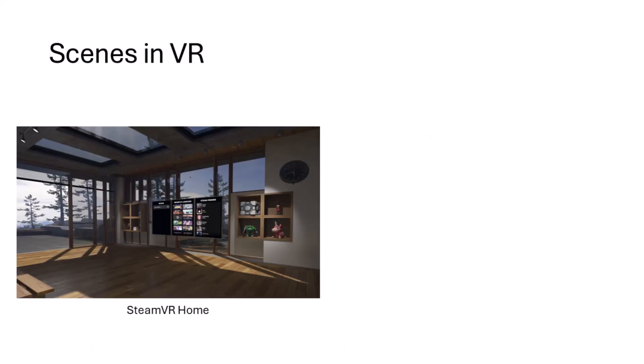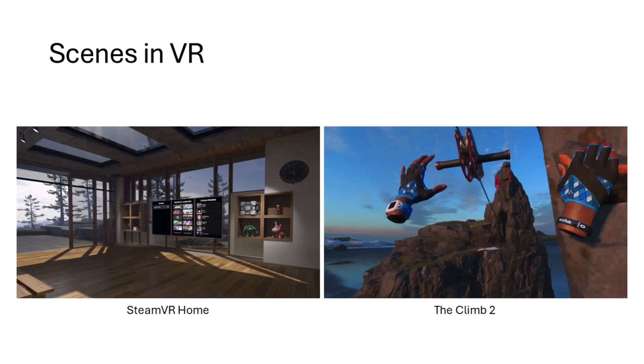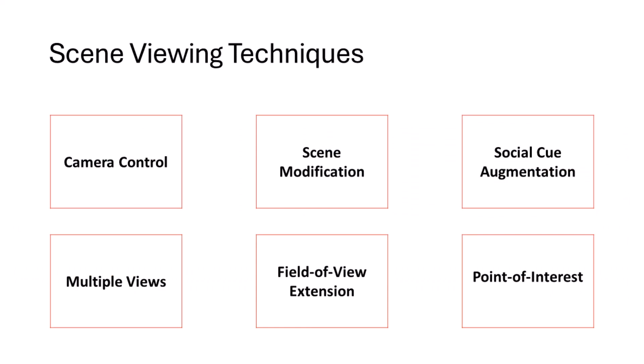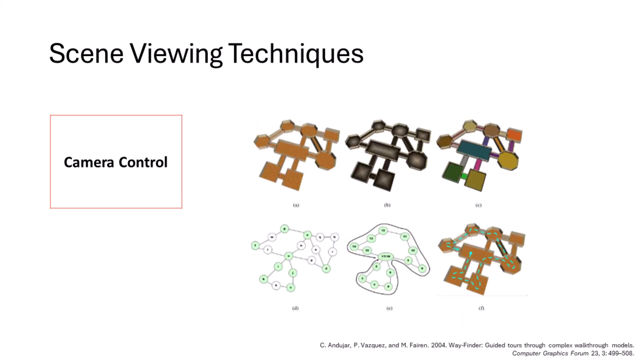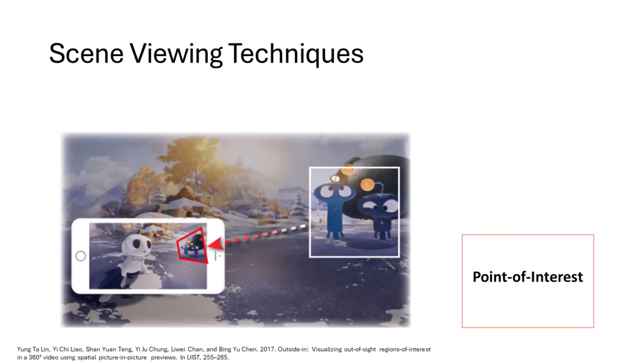Scenes in virtual reality environments are designed to resemble physical environments and, as a result, considerable effort goes into making them believable. For example, environments like SteamVR Home can evoke a comfortable cabin in the woods, while the VR game Decline can transport users to exciting locations that might be too dangerous to visit in person. The richness of scenes and their lack of physical constraints has resulted in the creation of various scene viewing techniques over the past few decades. These techniques include approaches like automatic camera control, which can provide guided tours through various virtual environments, and techniques like outside-in, which is a point of interest technique that makes out-of-view content visible to users.